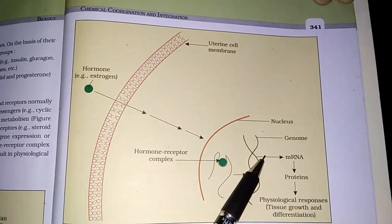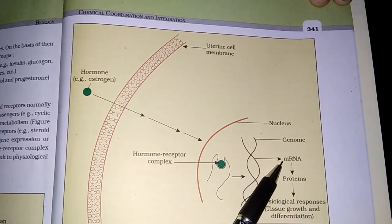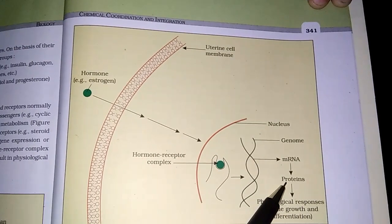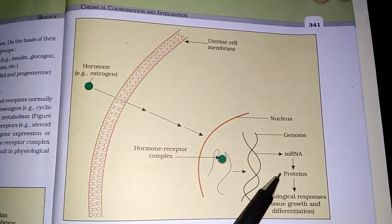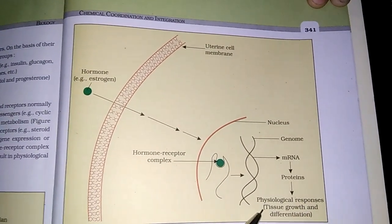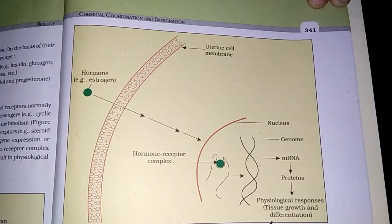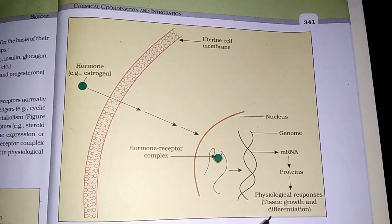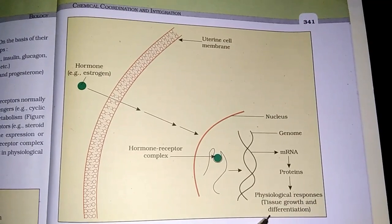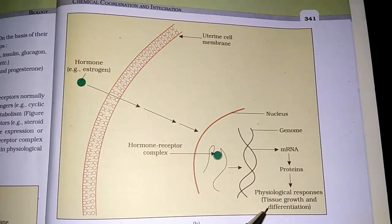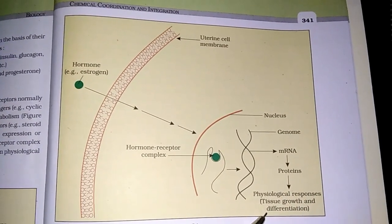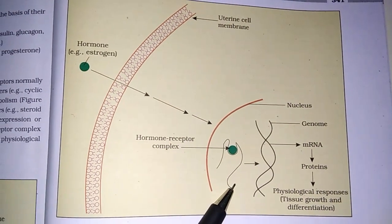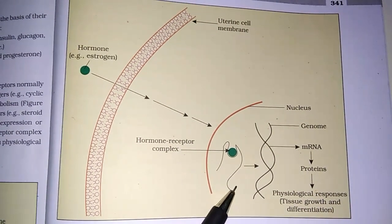And DNA transcribe into messenger RNA, messenger RNA translation, and protein. Now protein which function performs — which particular hormone function. So this steroid hormone intracellular receptor bind action perform. Important point is: transcription in nucleus.